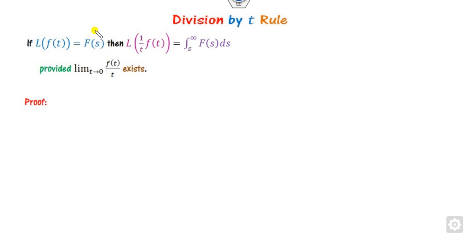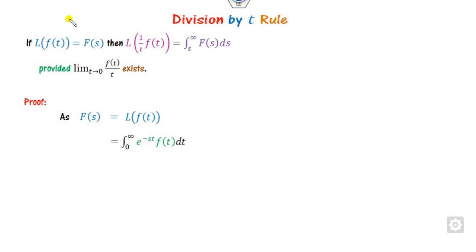So what is the division by T rule? If you have the Laplace transformation of f(t) and you divide f(t) by t, then it is nothing but the integration of whatever answer you have, provided this limit exists. The proof is very simple — it is given here by the definition of the Laplace transformation.